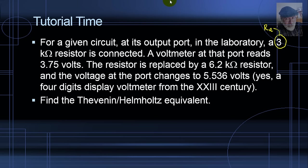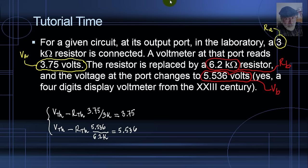3 kΩ is R_A, the value of the first resistor, and the voltage that appears is V_A, 3.75 volts. So 6.2 kΩ is R_B and 5.536 volts is V_B. Write the equations, solve for V_TH and R_TH, and next we draw the equivalent circuit. That is the solution to that exercise.